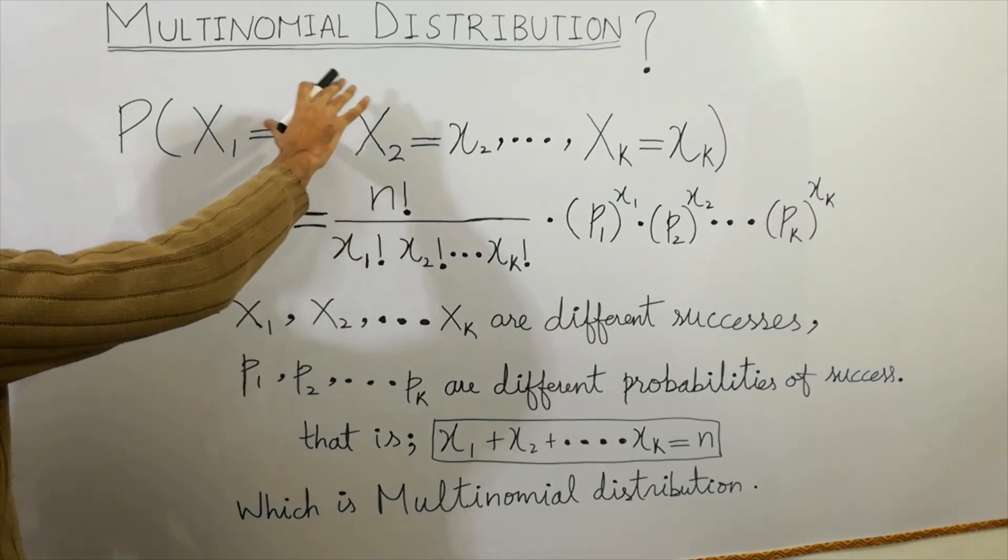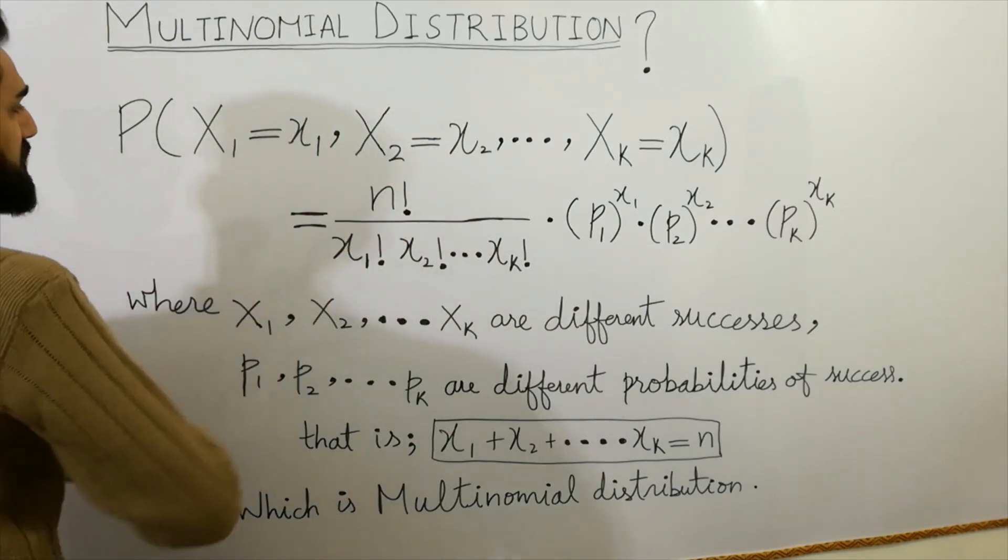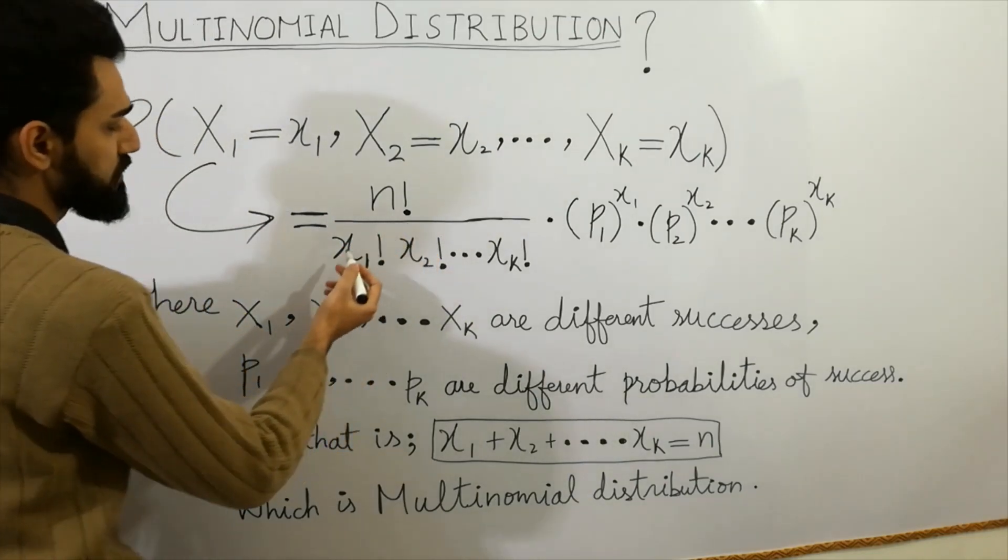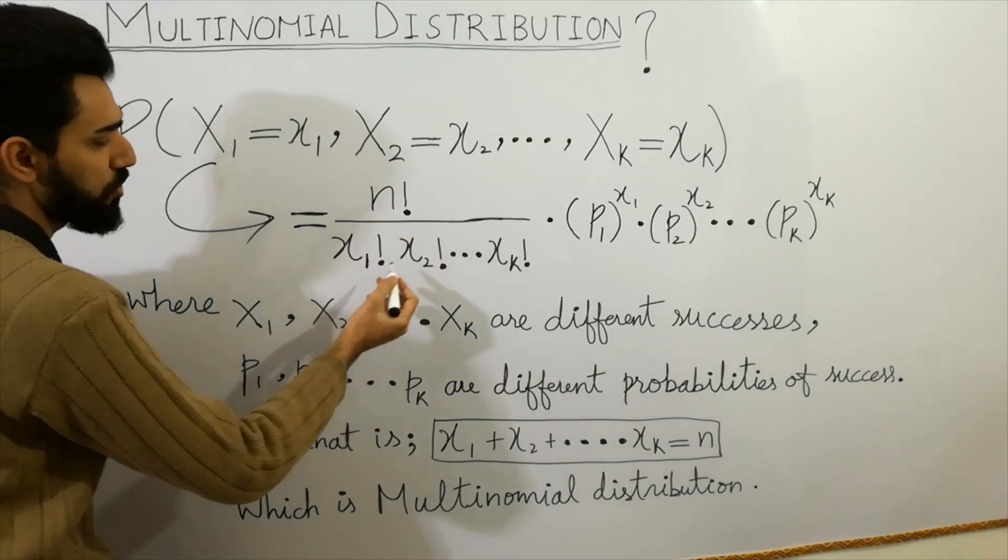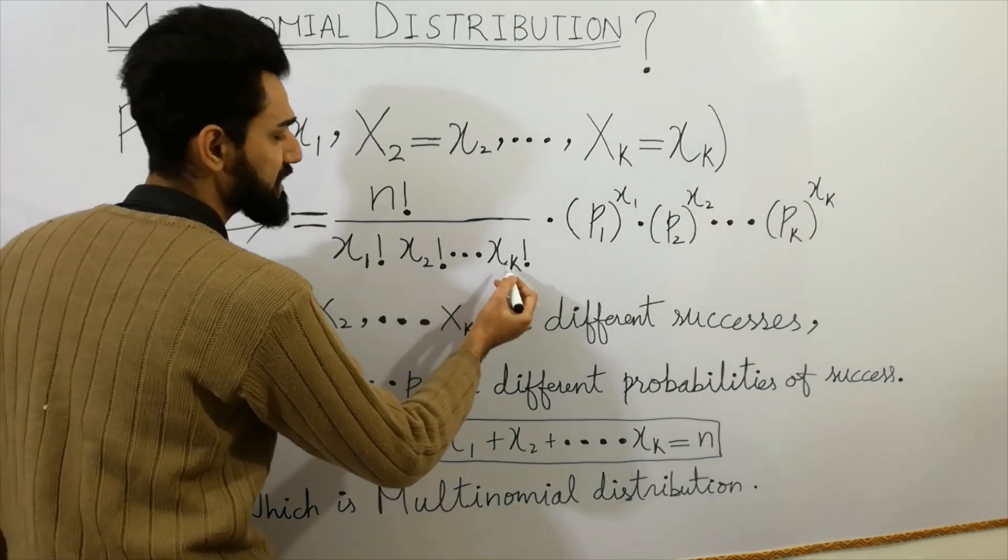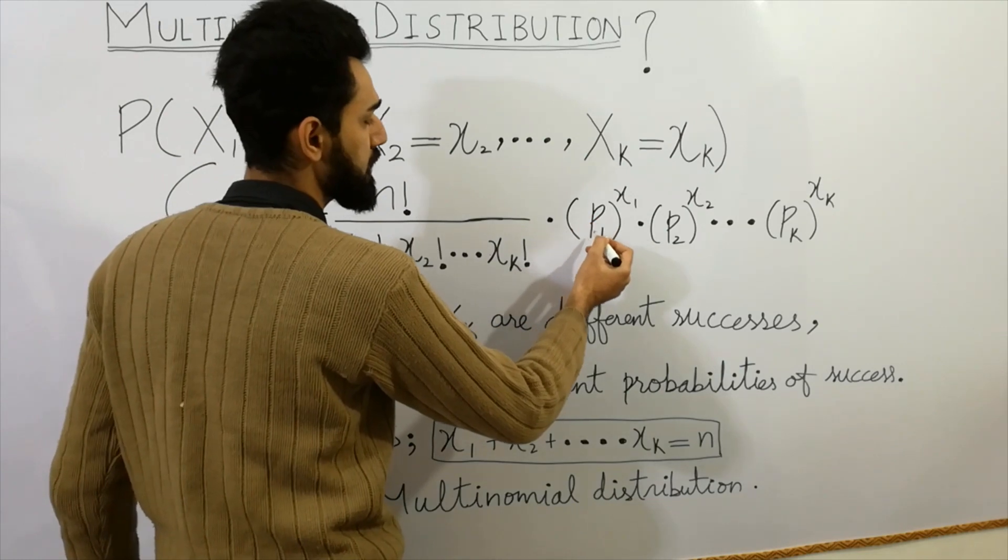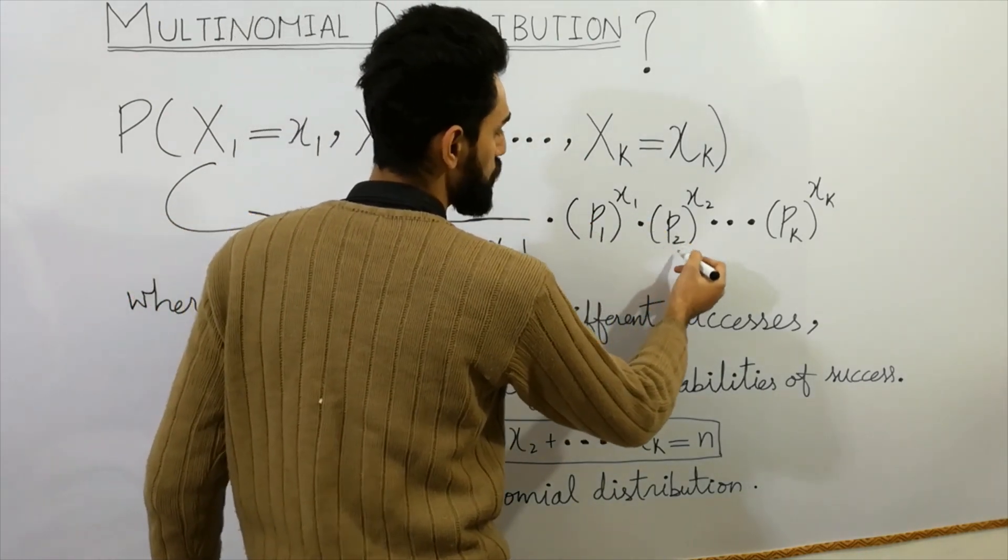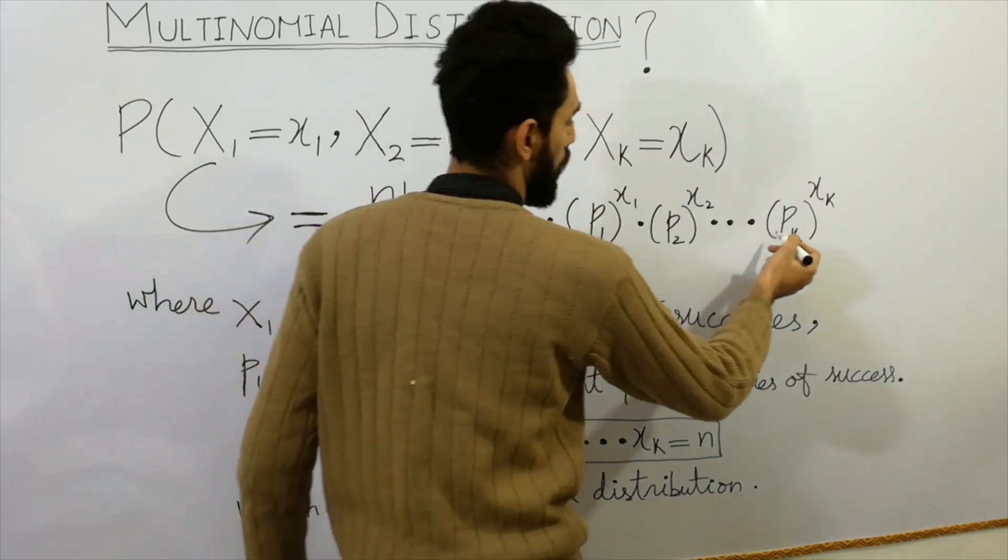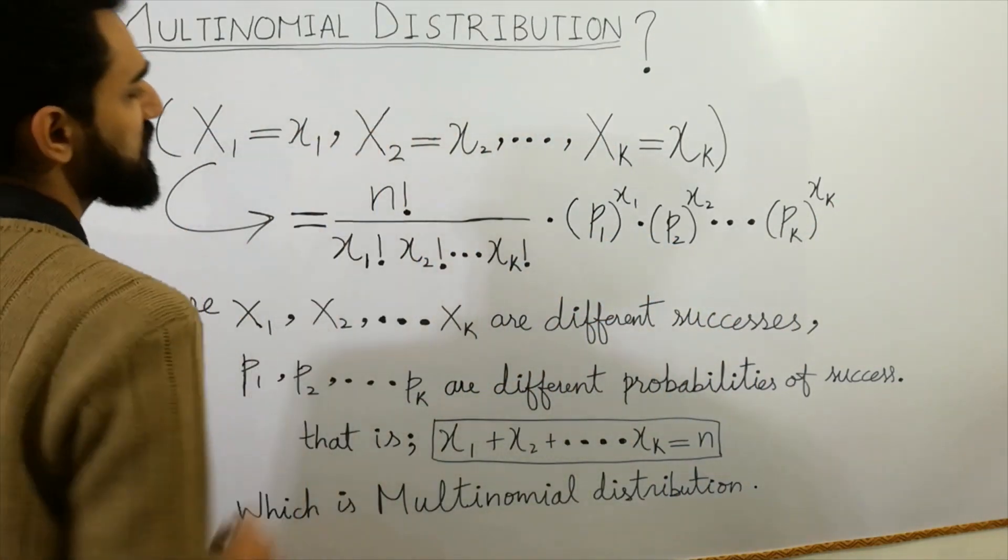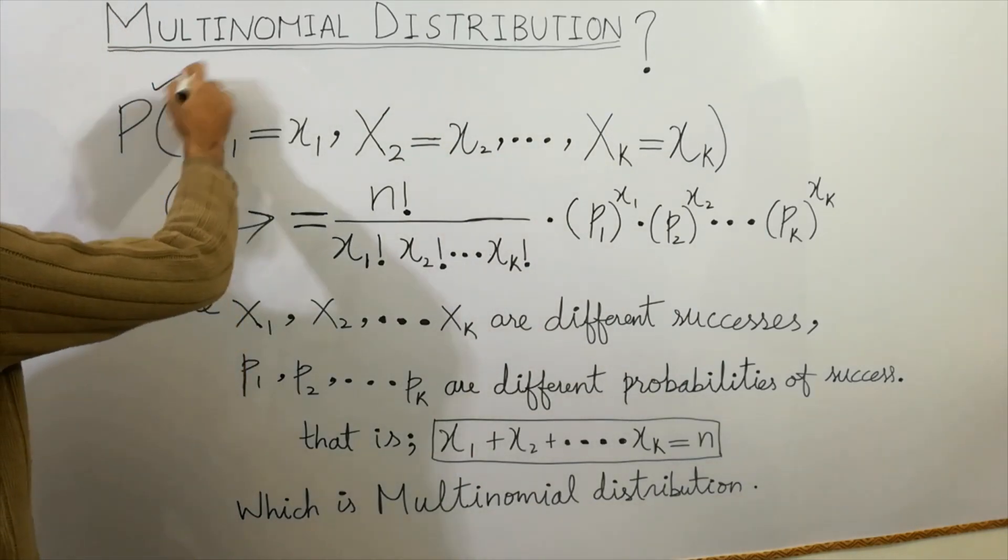Which is equal to n factorial divided by x1 factorial x2 factorial up to so on xk factorial, multiply by bracket p1 raised to power x1, multiply by p2 raised to power x2, up to so on pk raised to power xk. This is called as multinomial distribution and this is the formula of multinomial distribution.